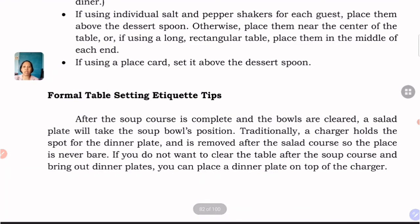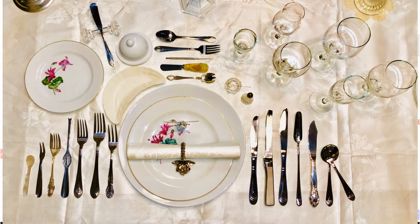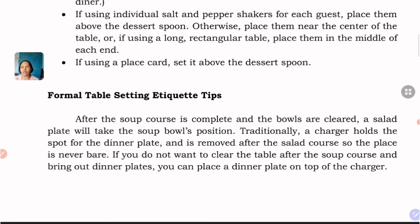Formal table setting etiquette tips: after the soup course is complete and the bowls are cleared, a salad plate takes the soup bowl's position. Traditionally, a charger holds the spot for the dinner plate and is removed after the salad course, so the place is never bare. If you do not want to clear the table after soup, you can place a dinner plate on top of the charger.